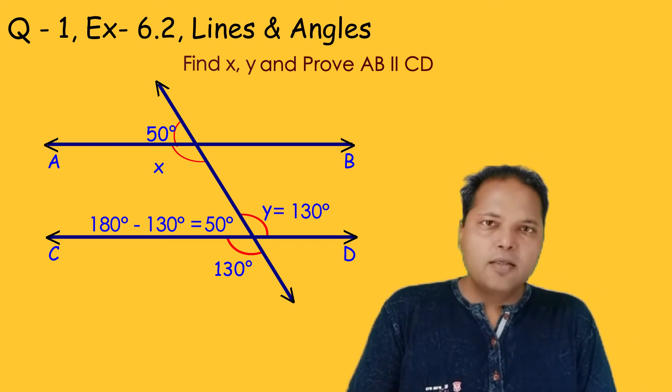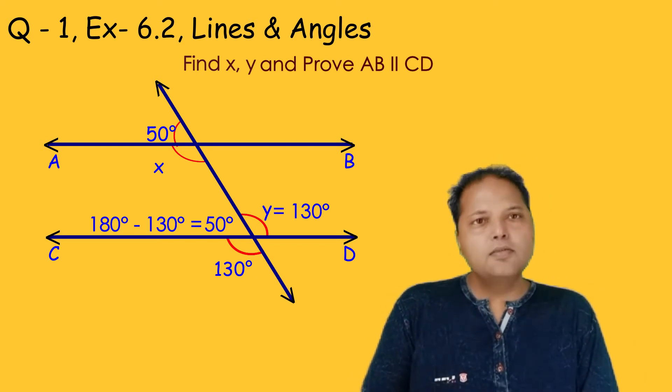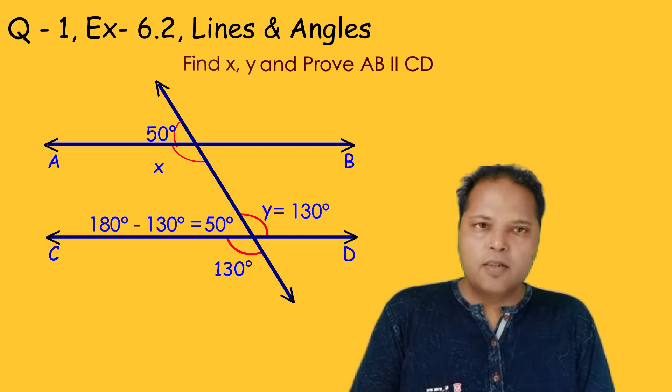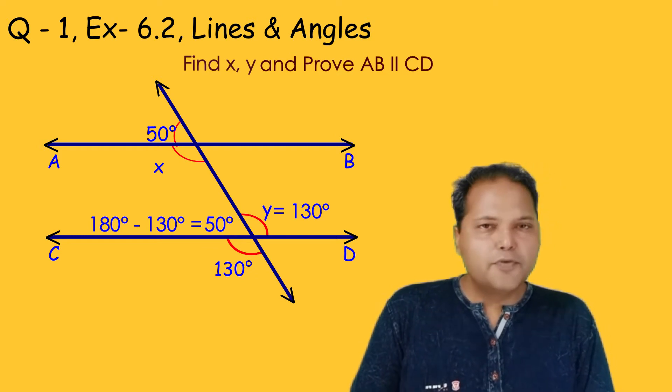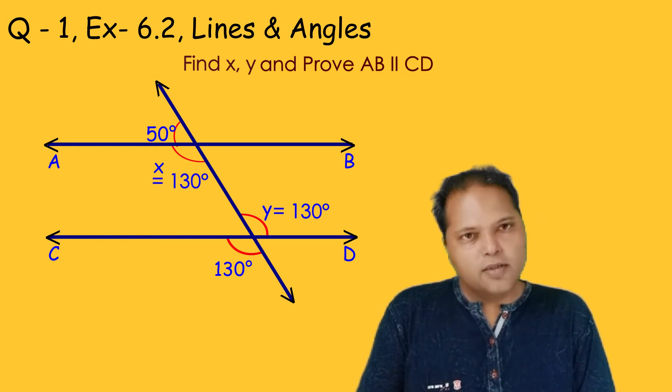Since our ray is also a straight line, angle X is equal to 180 degrees minus 50 degrees, which is equal to 130 degrees.